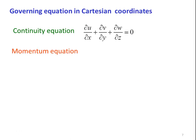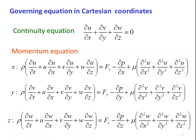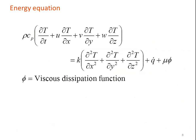The momentum equation in Cartesian coordinates is based on Newton's second law of motion — net force equals rate of change of momentum. There are three momentum equations: x-momentum, y-momentum, and z-momentum. The energy equation for the three-dimensional situation comes from thermodynamics, where T is temperature, Cp is specific heat, rho is density, u, v, w are velocity components in x, y, z directions, k is thermal conductivity, q-dot is the rate of heat generation, and phi is the viscous dissipation function. In total, we require one continuity equation, three momentum equations, and one energy equation for a Cartesian system convection problem.